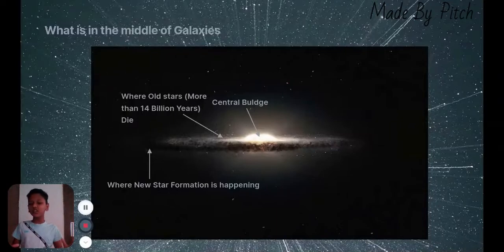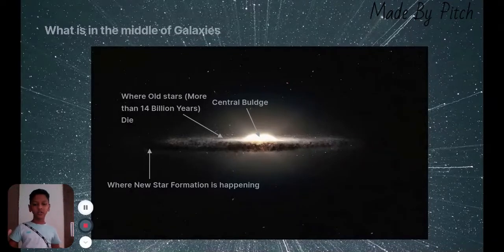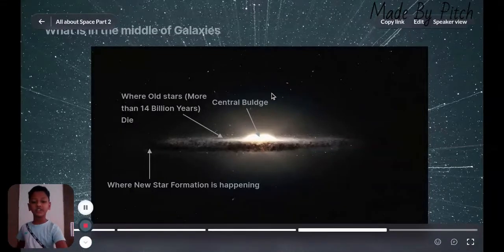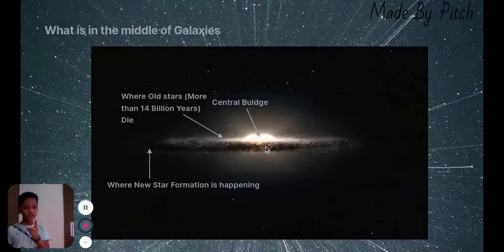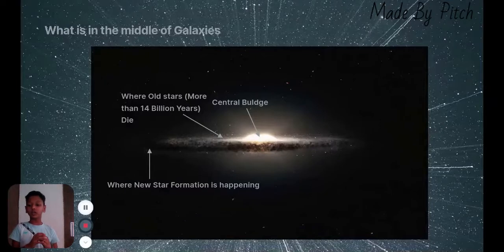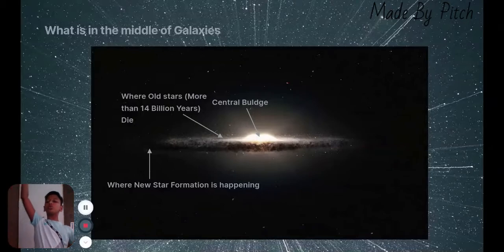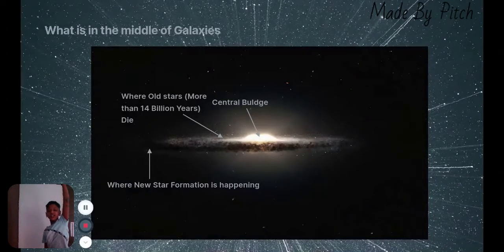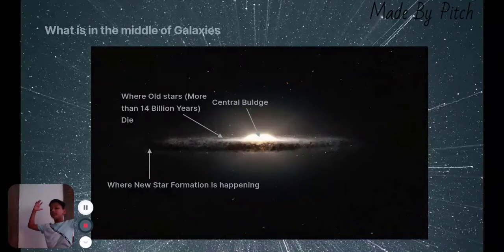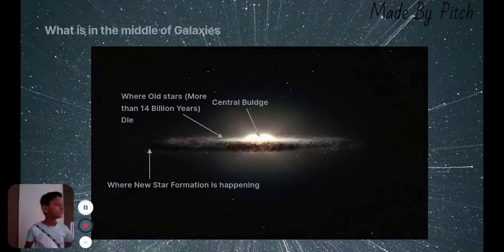Old stars mean more than 14 billion years. And then, the central bulge. The central bulge which is holding the supermassive black hole. It is holding the whole galaxy. Like imagine that is so long. Like my hand goes like this much. And that is like quadrillions, trillions of times higher than that.